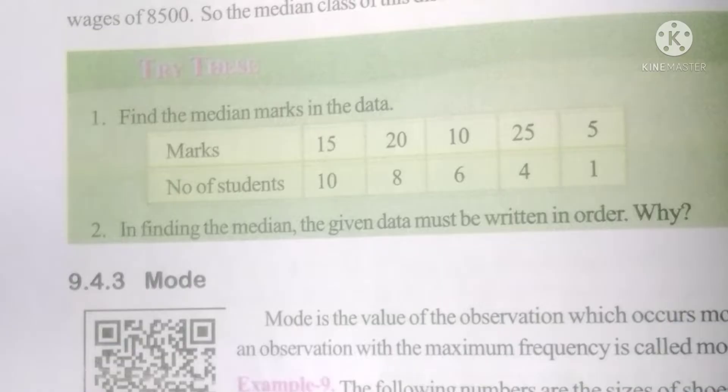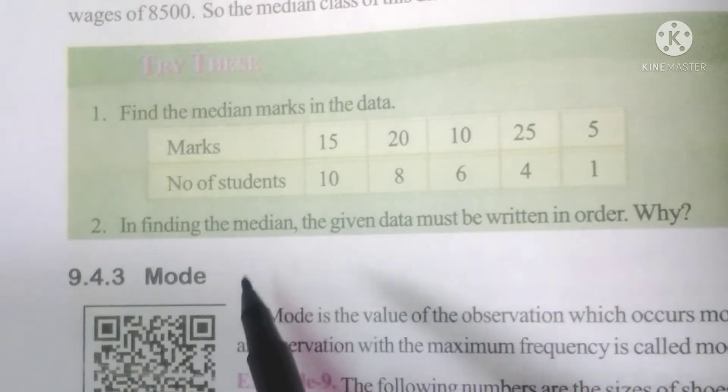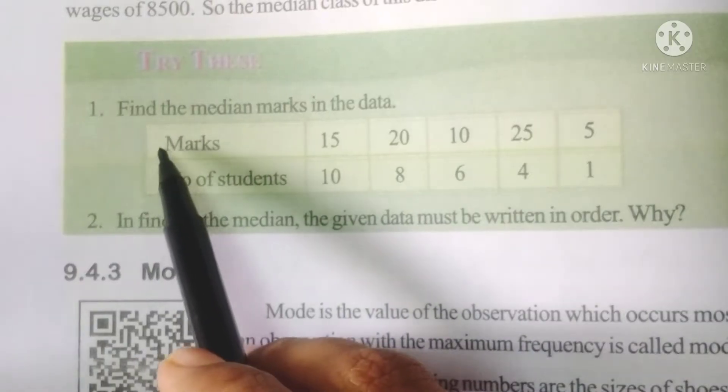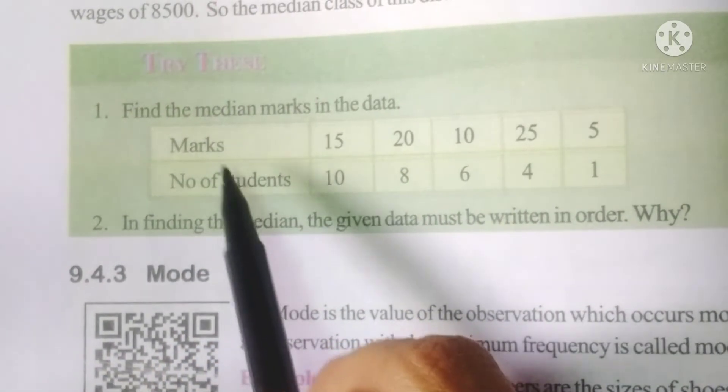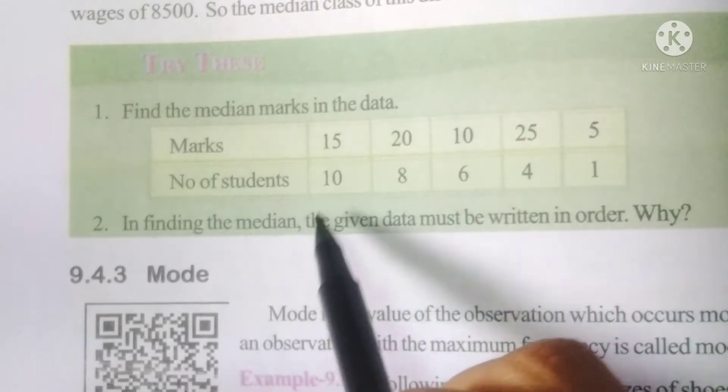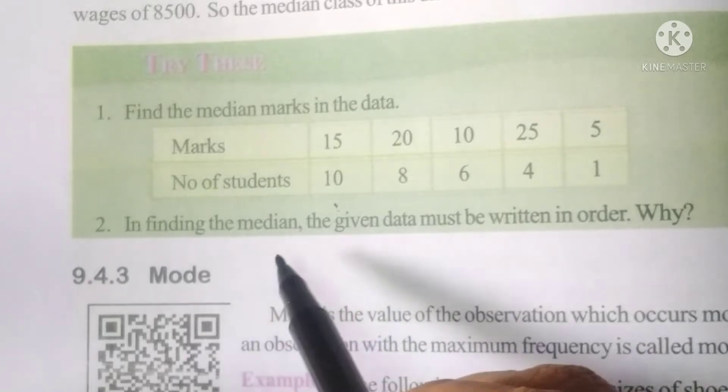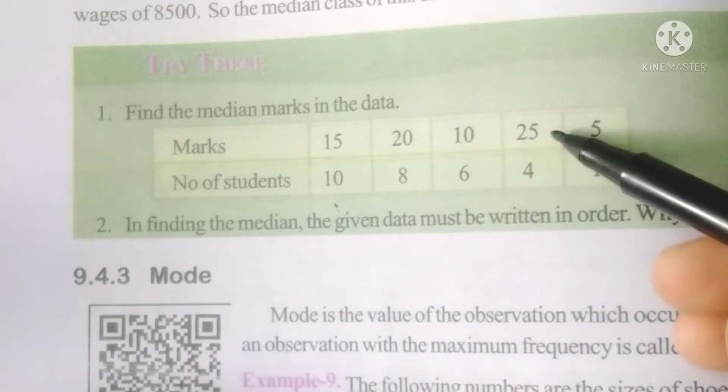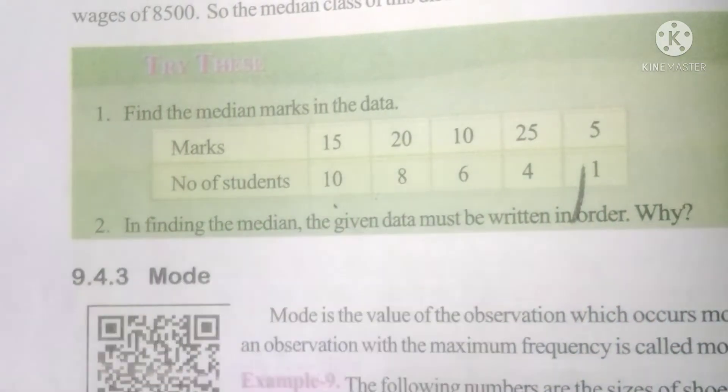Hello students, welcome to my channel. Today in this video we are going to see try these problems in page number 208. So first problem: find the median marks in the data. Here marks 15, number of students 10, and number of students who got 25 marks is 4. Just like this, the data is given.